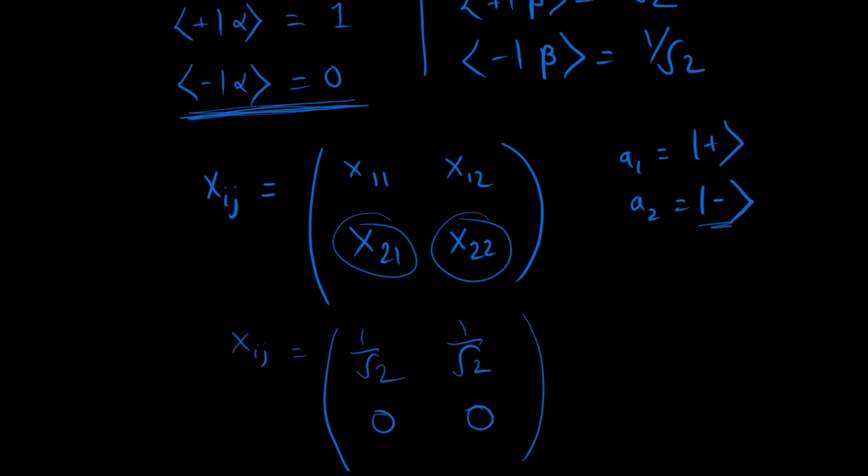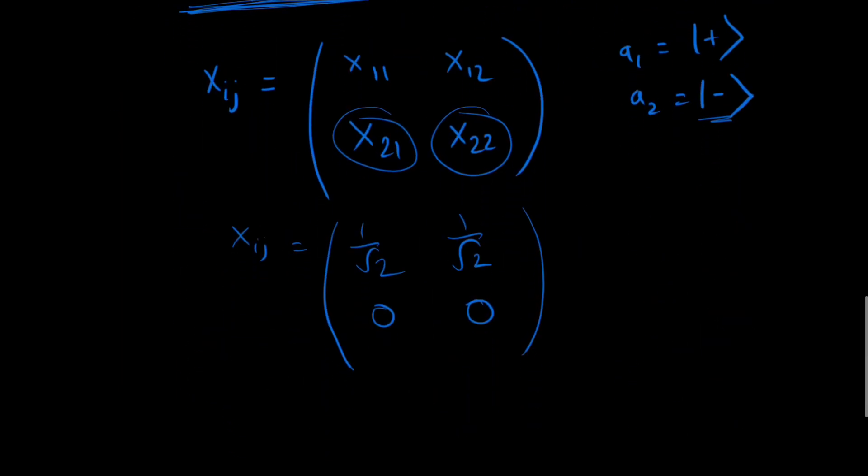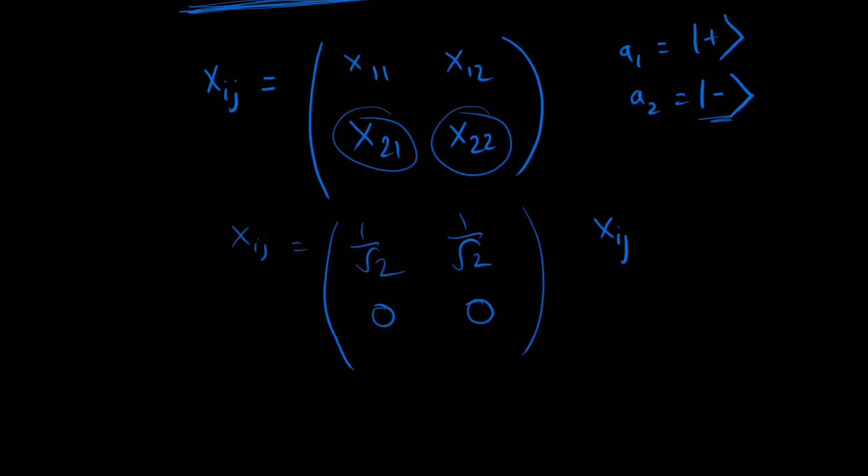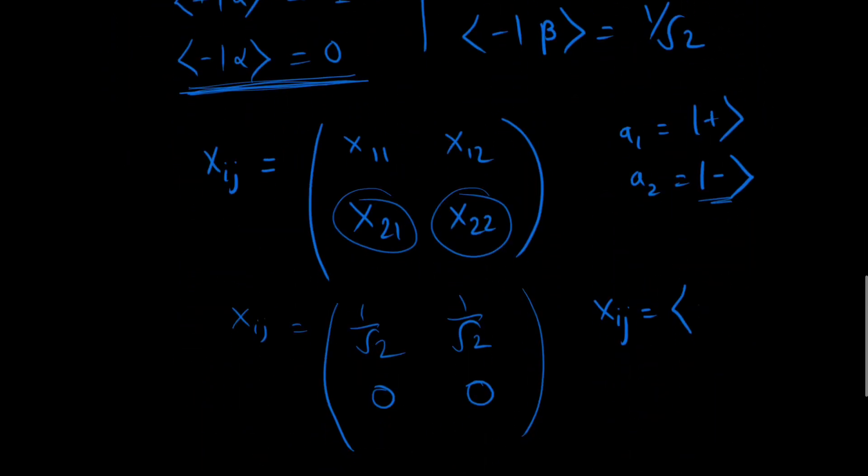I hope that is clear. It's just putting the values here. Let me explain that once again. So this is just xij which is a_i alpha, a_j beta.